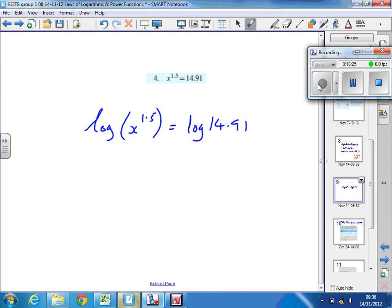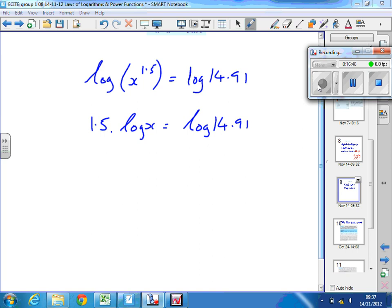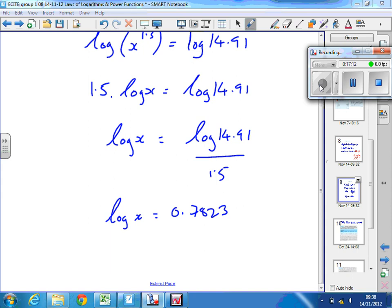Logarithm of x to the 1.5 equals logarithm of 14.91. Because, I've taken logarithms, the 1.5 can come down and become multiplied. So, 1.5 times the logarithm of x. Then, we do divide both sides by 1.5. So, the logarithm of x equals logarithm of 14.91 over 1.5. So, we work out what that is. What's the logarithm of 14.91 over 1.5? Which turns out to be 0.7823.